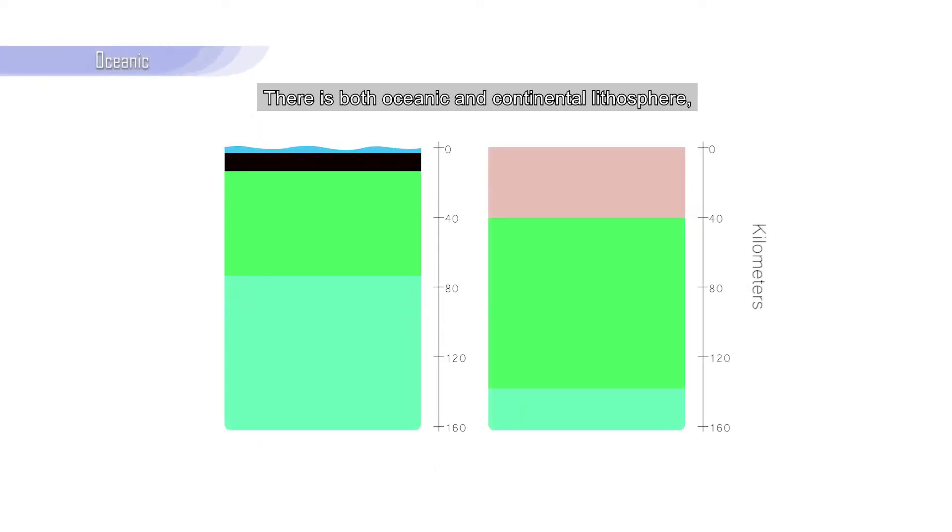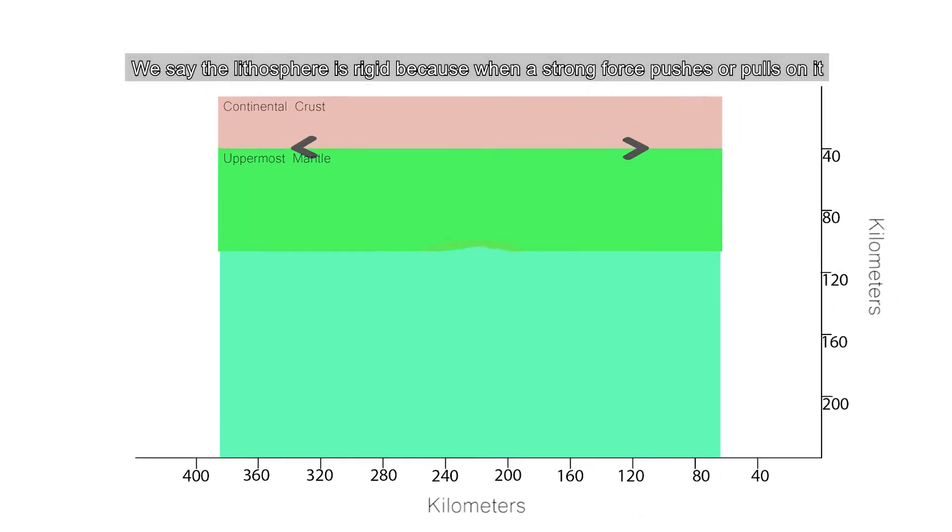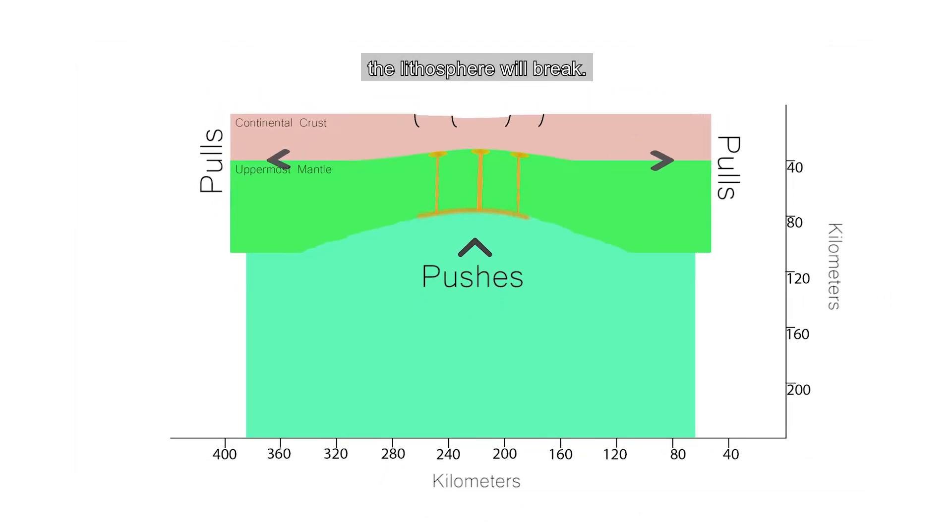There is both oceanic and continental lithosphere, and these are the plates of plate tectonics. We say that the lithosphere is rigid because when a strong force pushes or pulls on it, the lithosphere will break.